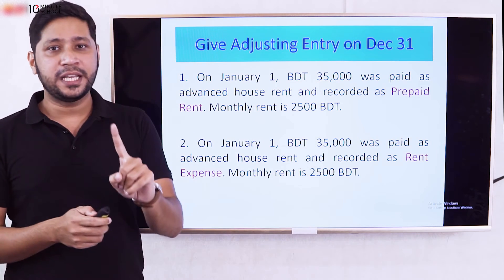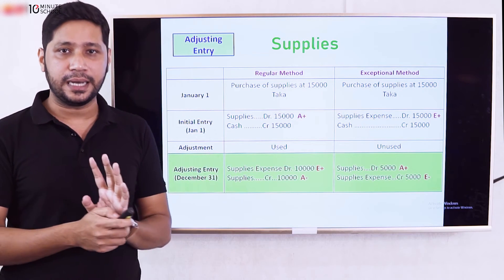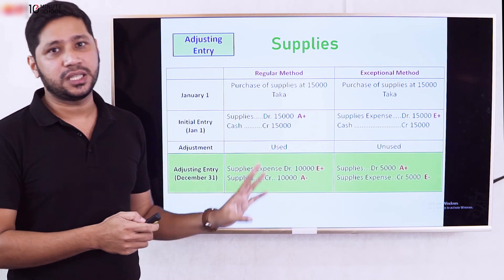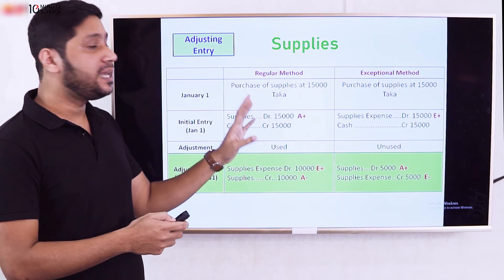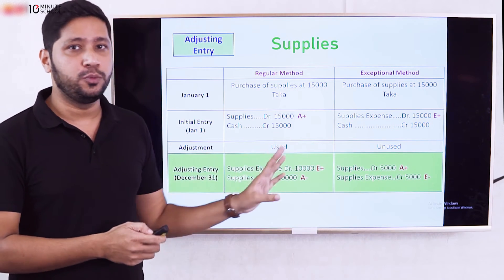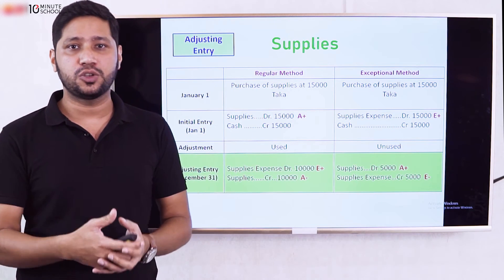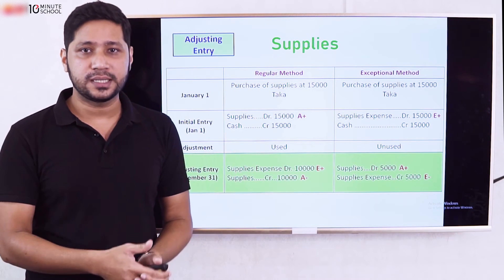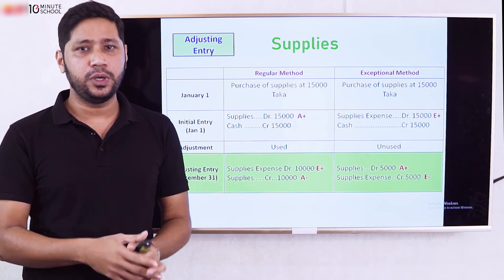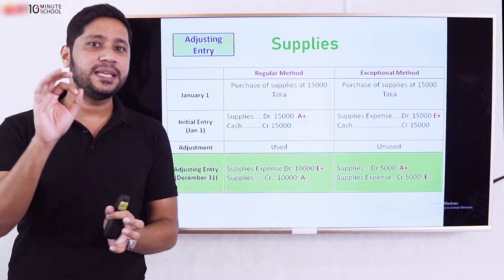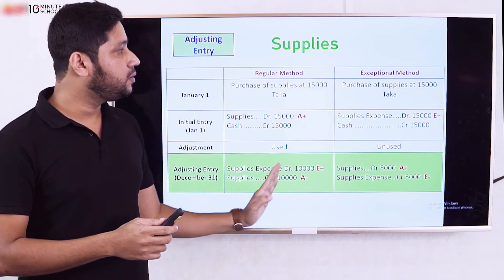A similar prepaid expense concept applies to supplies. Supplies means stationary in British accounting, and in American accounting the term 'Supplies' is used. Supplies recorded as an asset is an adjusting entry situation — Supplies means asset initially, and Supplies Expense is the used portion.